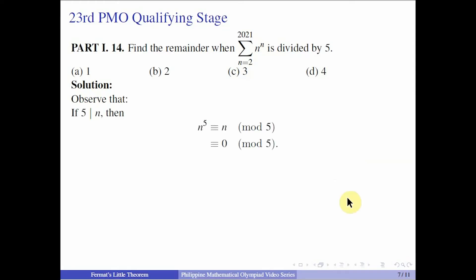Again, we use Fermat's Little Theorem. If 5 divides n, then n^5 ≡ n (mod 5). So n being divisible by 5, it should be 0 mod 5. And what if 5 does not divide n? Again, 5 is prime, so therefore they are relatively prime. You can use the second form of Fermat's Little Theorem. So n^4 ≡ 1 (mod 5).